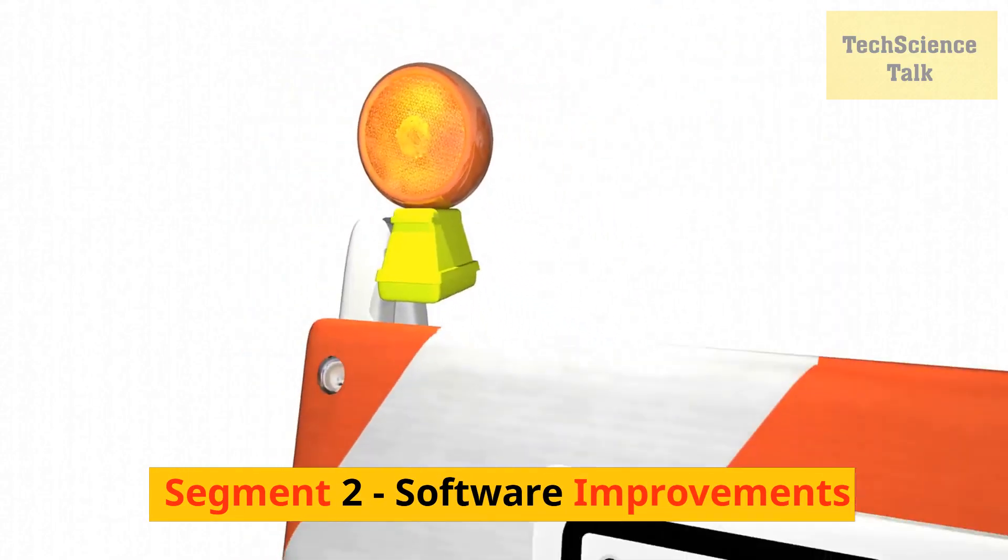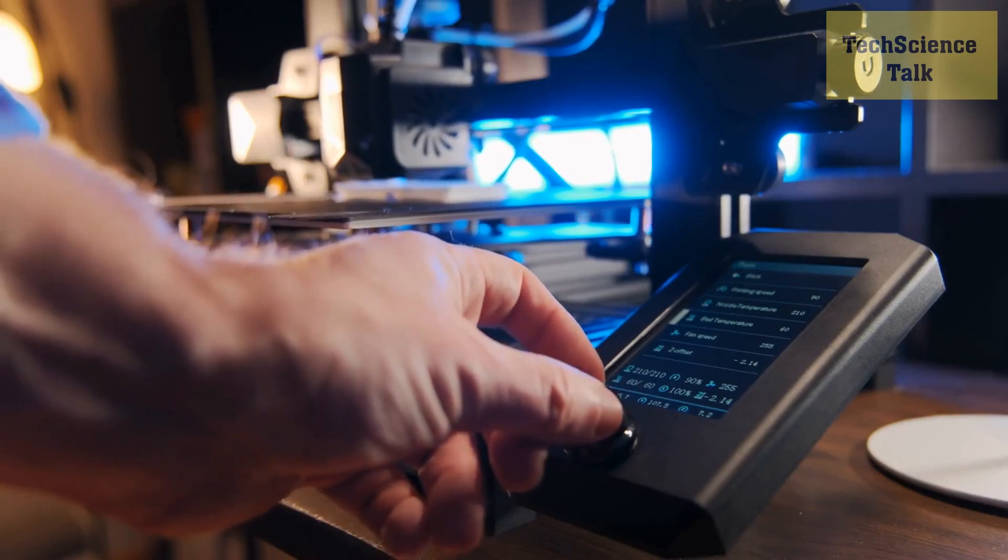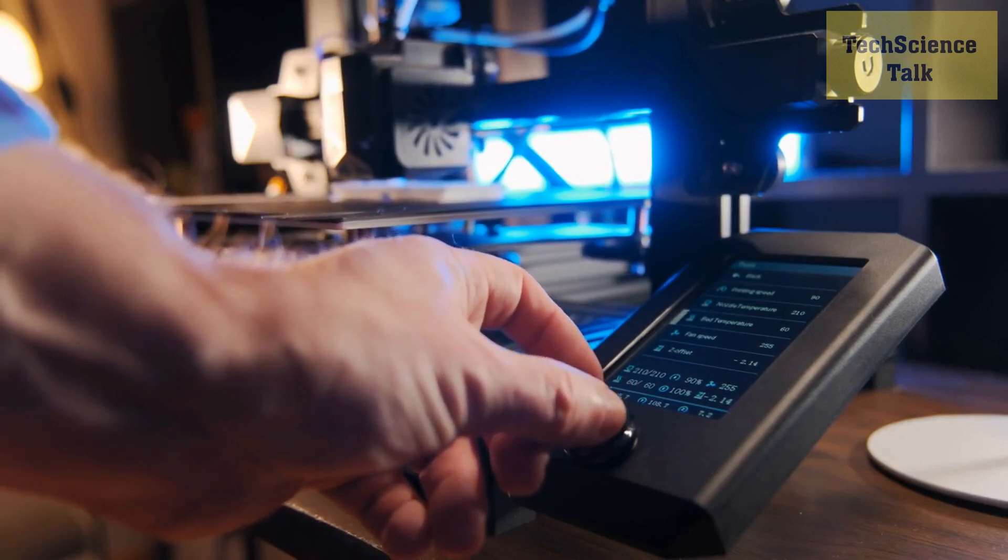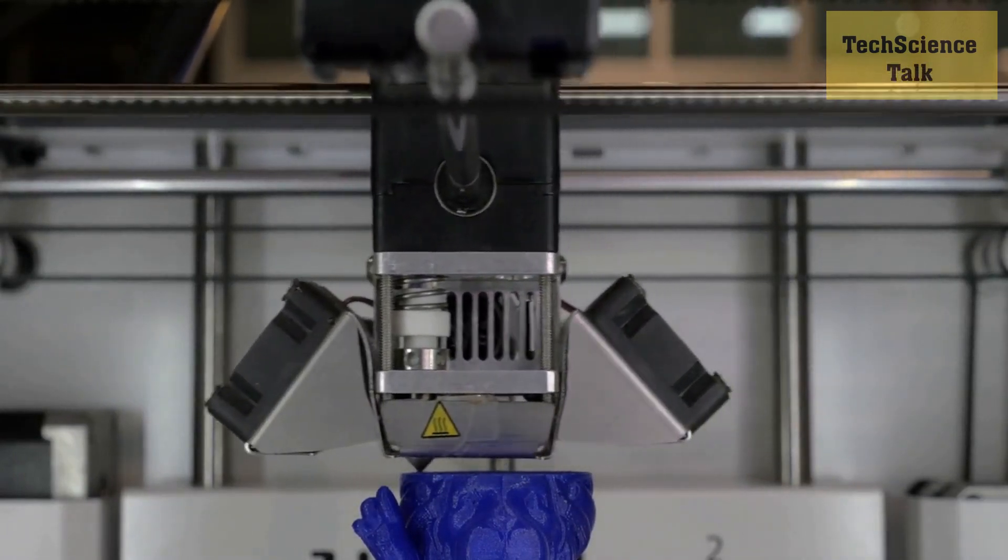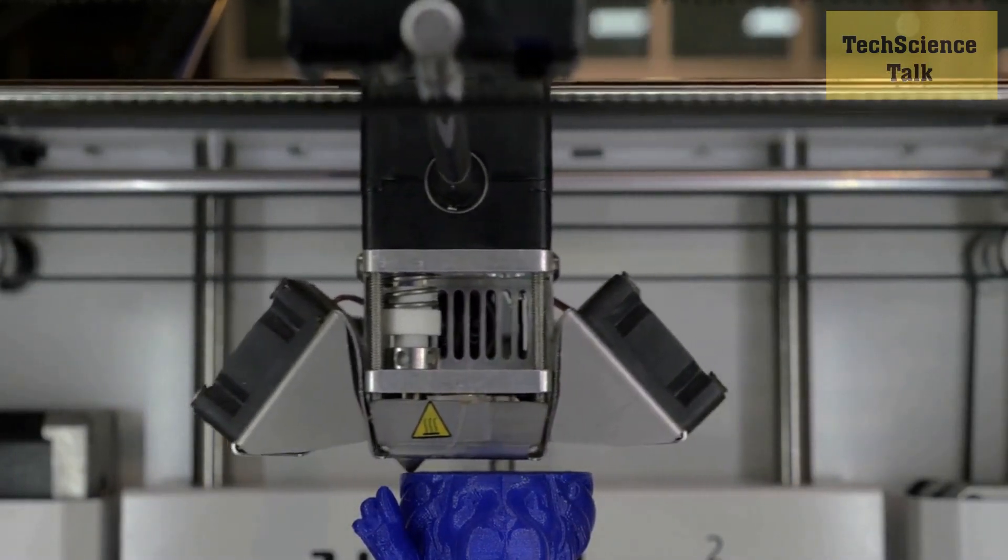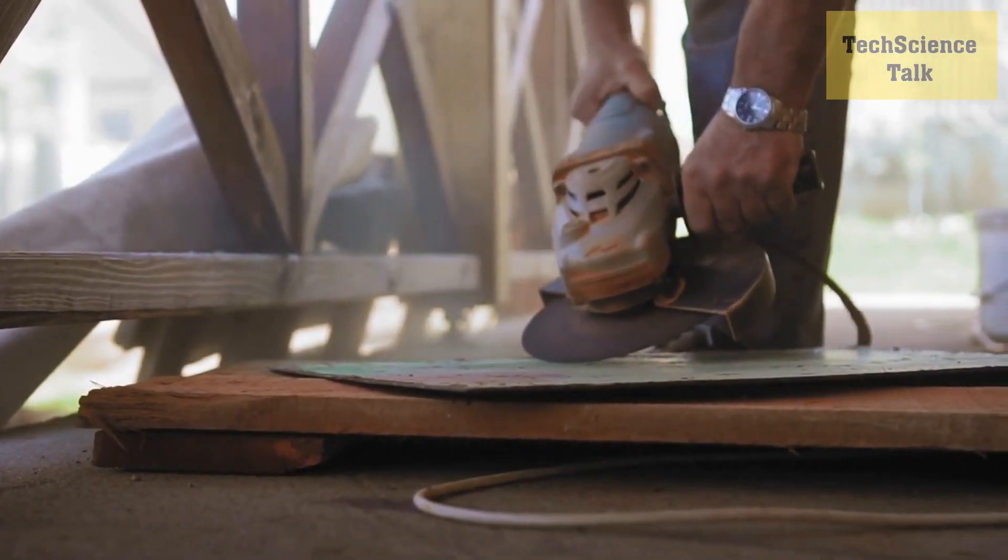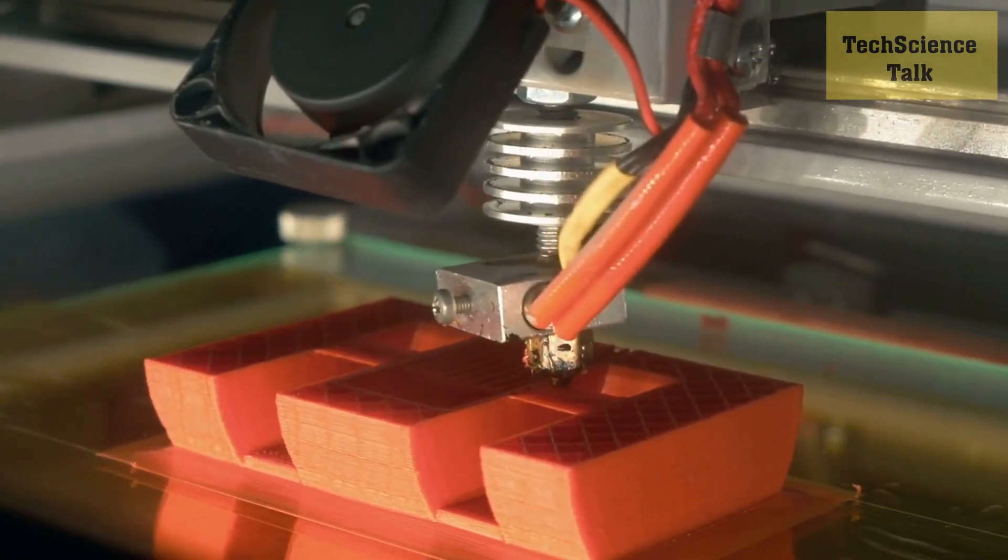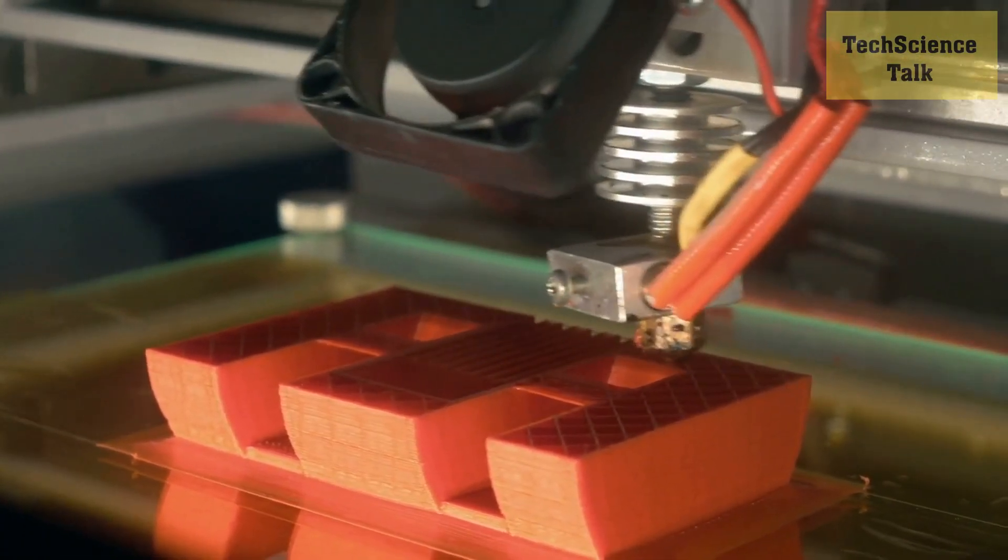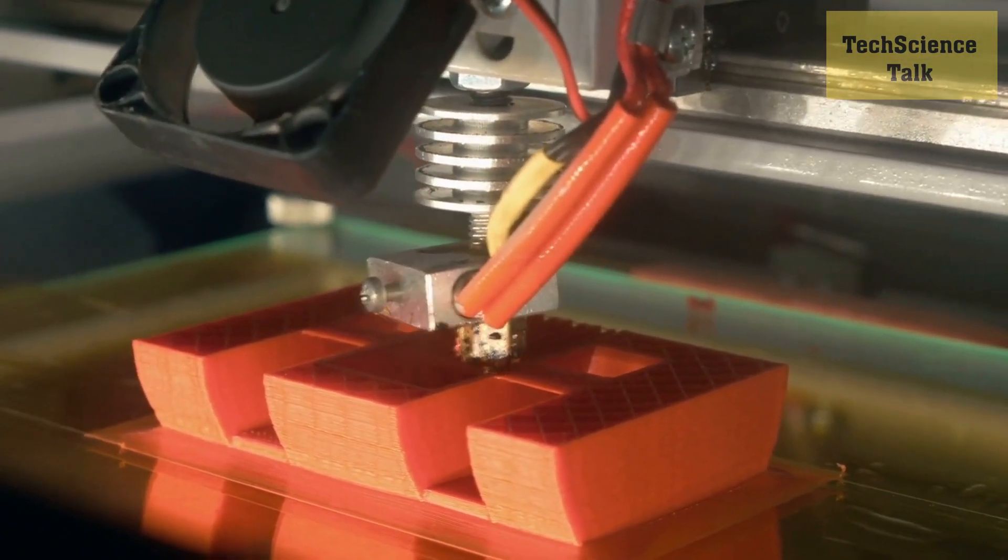Segment 2: Software Improvements. Another big advancement has been in the software used to design and prepare 3D models for printing. There are now powerful programs that can simulate how a model will print and detect potential issues before the actual printing process begins. This saves a lot of time and material by avoiding mistakes and ensuring a high-quality end result. There are also tools that can automatically optimize a model's design for strength, weight, or other factors, making it more efficient and cost-effective to print.